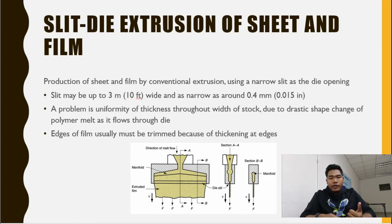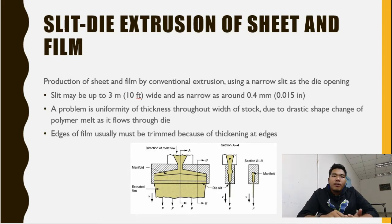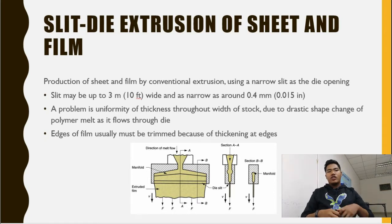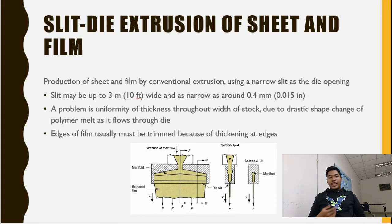For slit die extrusion, sheet and film are produced by conventional extrusion using a narrow slit as the die opening. The slit may be up to 3 meters wide and as narrow as around 0.4 mm. To achieve uniform thickness throughout the width of the product, a problem arises due to the drastic shape change of the polymer melt as it flows through the die. Edges of the film usually must be trimmed because of thickening at the edges.